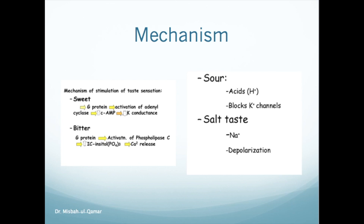The presence of salt leads to the entry of positively charged sodium ions through specialized channels, resulting in receptor depolarization. For sweet taste, the presence of glucose leads to activation of the cyclic AMP second messenger pathway, resulting in phosphorylation and blockage of potassium channels. Bitter taste causes activation of the G-protein and phospholipase C messenger system, resulting in calcium release.